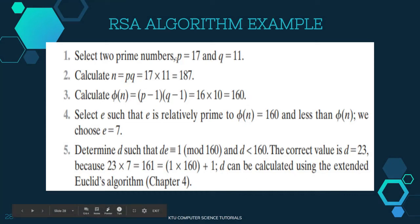We will see an example for RSA with n numbers. We start by choosing two prime numbers p and q. P is not equal to q. We choose p equal to 17 and q equal to 11. Then we calculate the value of n: p into q, that is 17 into 11, which equals 187. So n equals 187.